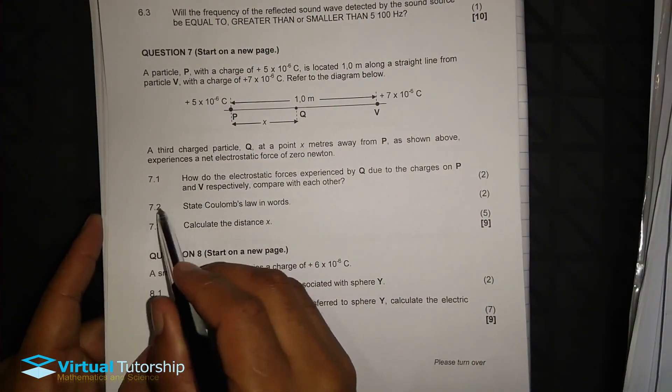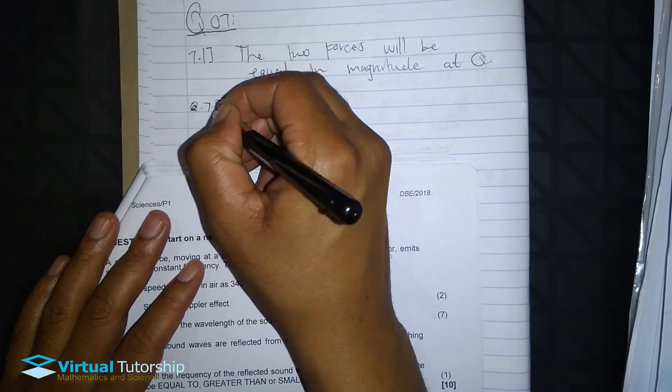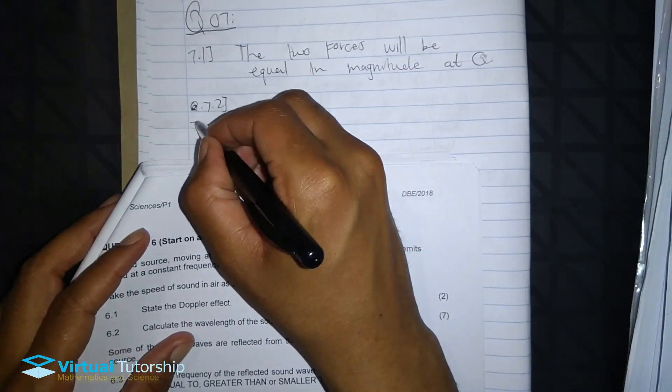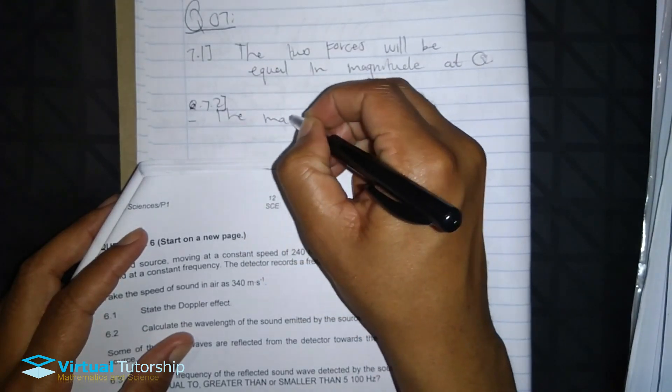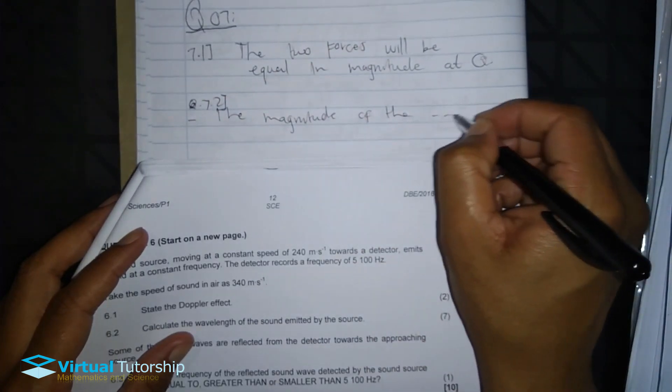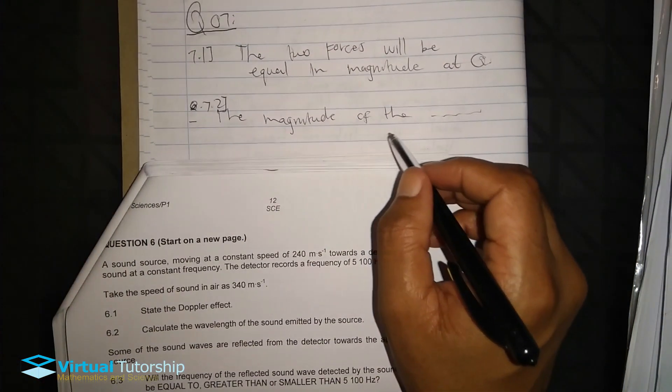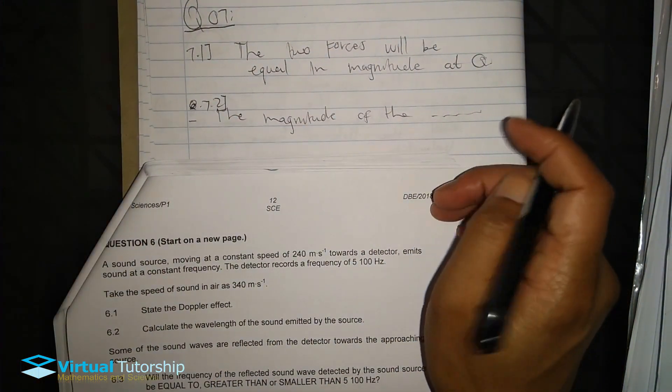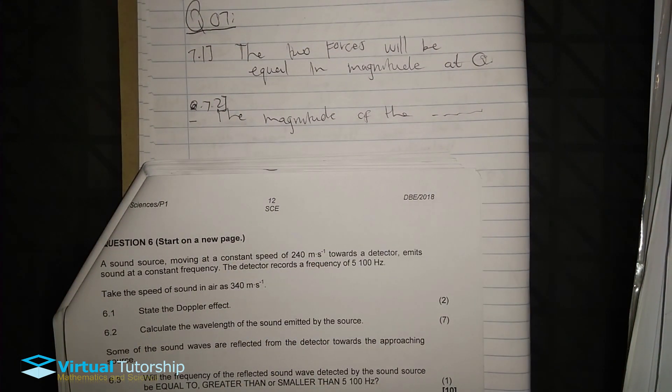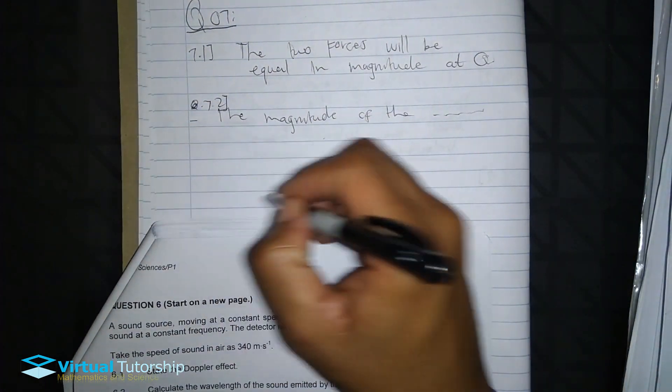So this is a positive charge and another positive charge. But Q experiences 0 force, so it means that for question 7.1, this is Newton's third law. So 7.1, the two forces will be equal in magnitude at Q. So that's how they compare with each other. Since it's 0 force, it means they cancel each other out. Now 7.2, state Coulomb's law in words.